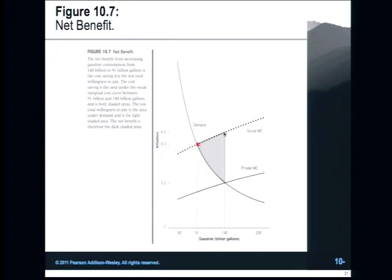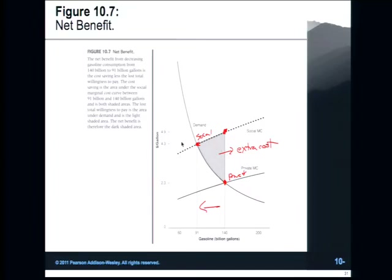Here's this triangle: our willingness to pay as a society is different. We're at the wrong point — our social point is here and our private point is here. This is extra costs that our society is paying for being at the wrong point. At the uncorrected free market point, we're consuming way out at 140 billion gallons of gasoline, and the costs to society are much higher than the willingness to pay. If we added in all these external costs, we would shift in the amount of gasoline consumed until our willingness to pay equals the social cost.